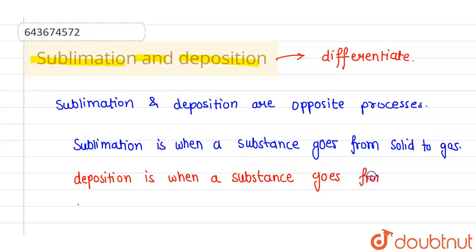So basically these are opposite processes because in one process the substance is going from solid to gas in sublimation, whereas in deposition it is going from gas to solid. So that's why these are opposite processes.